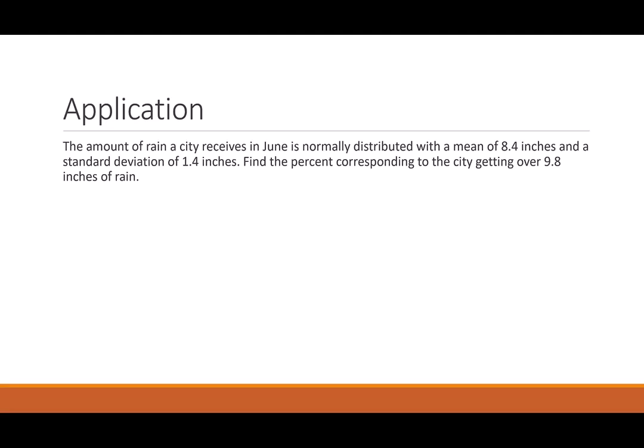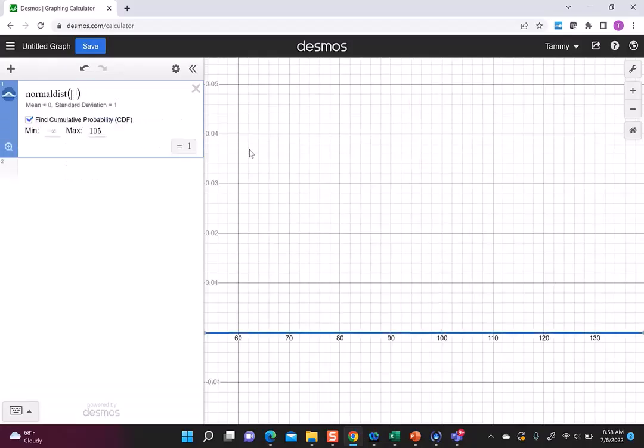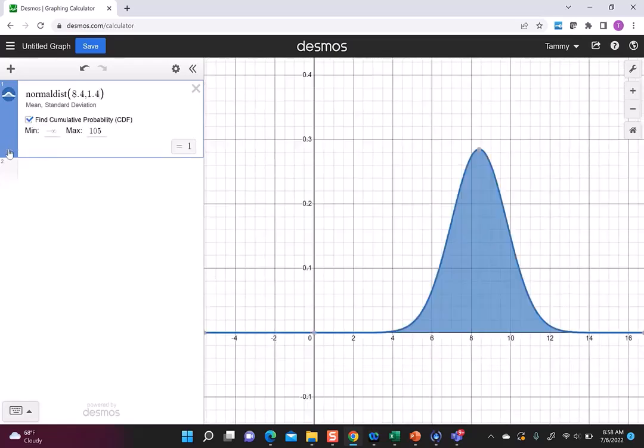So this time, because it's only asking for a percent, I'm not going to do the conversion to z. I'm just going to go straight to Desmos and look at the percent from the graph. So I'm still in normal distribution, but I want to tell it my mean this time, 8.4, standard deviation 1.4. I already have it checked to find cumulative, but I do want to hit this zoom fit so I can see this. So now here's my mean, 8.4.